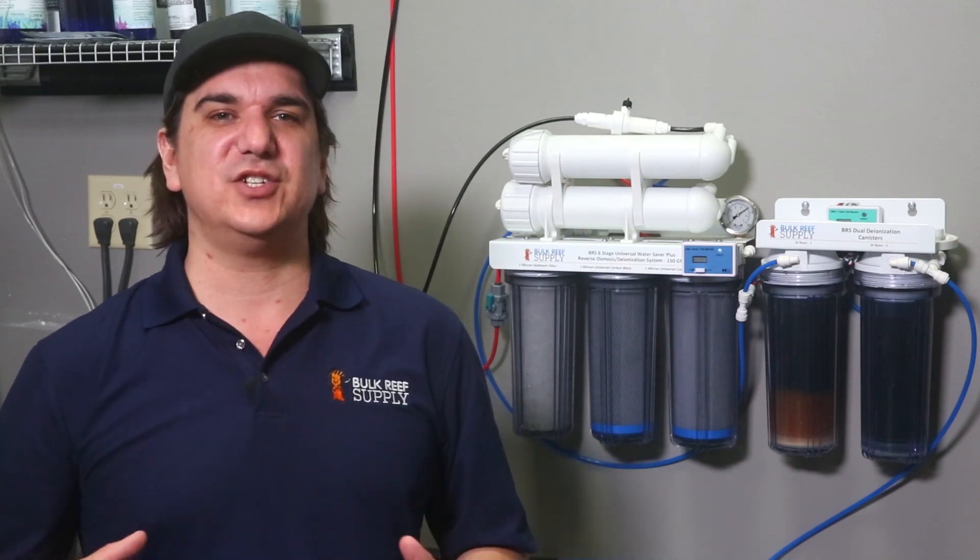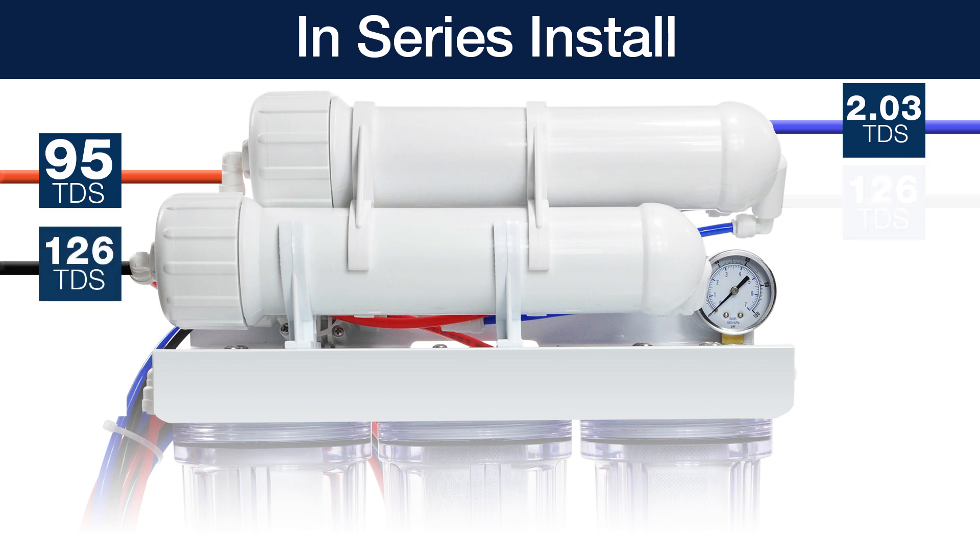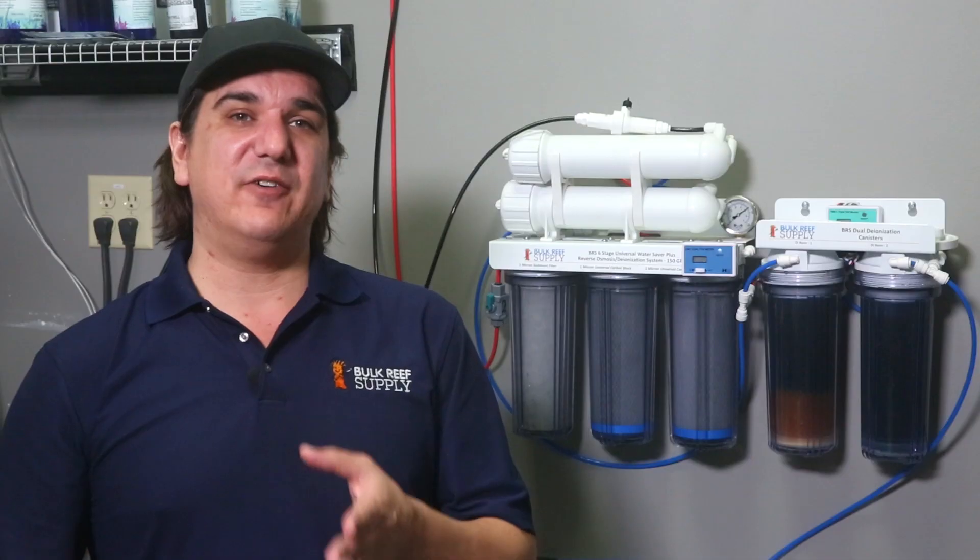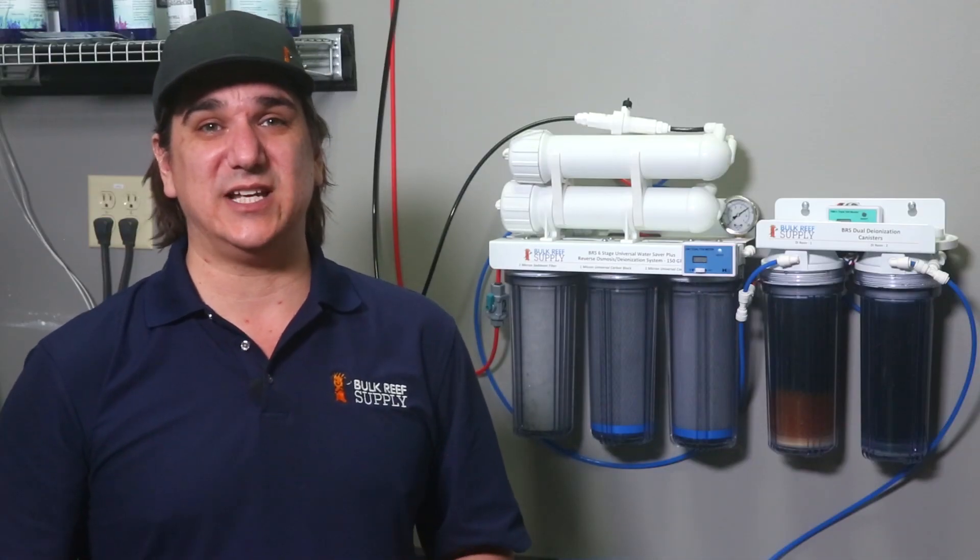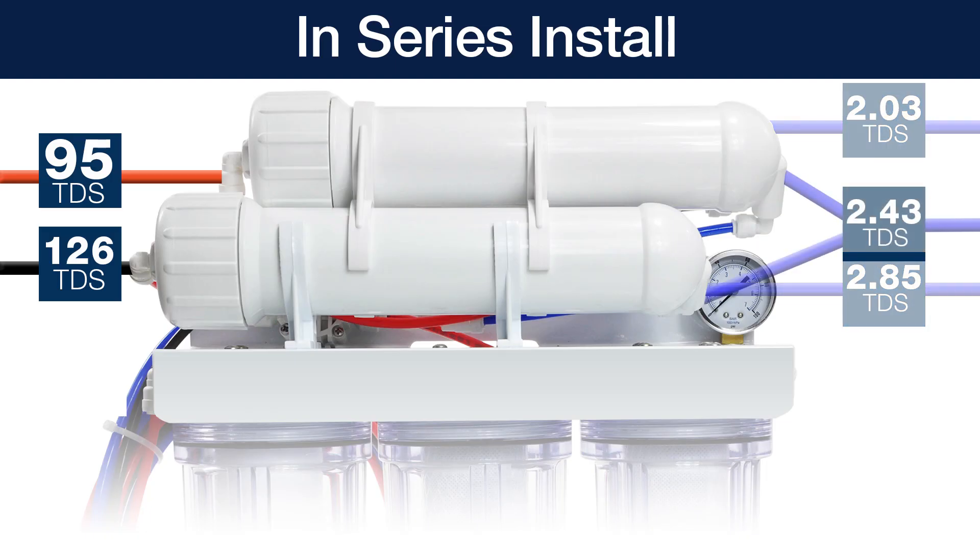The waste water is often referred to as concentrate because by effectively removing the purified water from the solution, you are concentrating the contaminants in the remaining solution. In this case, the concentrate from the first membrane has 33% more TDS than the feed water. So feeding the now 126.6 TDS concentrate from the first membrane into the second, we saw product water of 2.85 TDS, which is approaching one TDS higher and about 97.5% rejection. However, this is still under the range which most common TDS meters can even detect, and once you combine the two product waters into a single solution, the overall TDS dropped to 2.43.